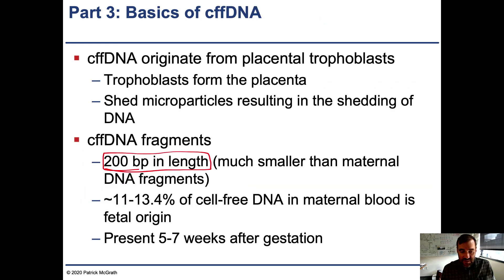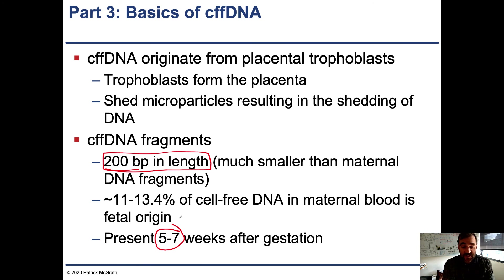This means tests for Down syndrome can be performed very early in pregnancy using cffDNA. These tests can also determine the sex of the baby — the sex of the instructor's second child was determined this way, revealing early on that she would be female.